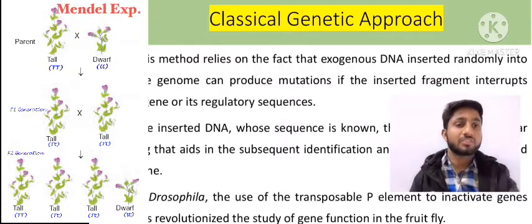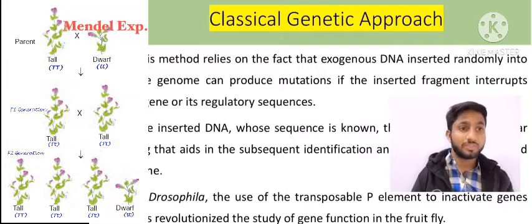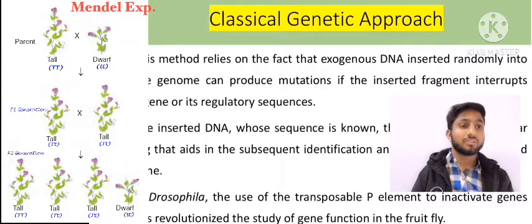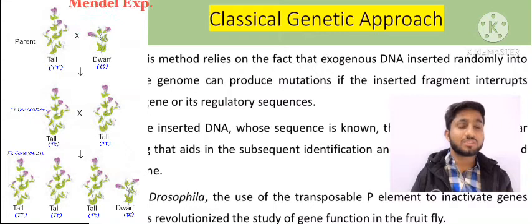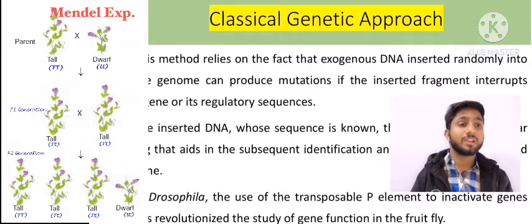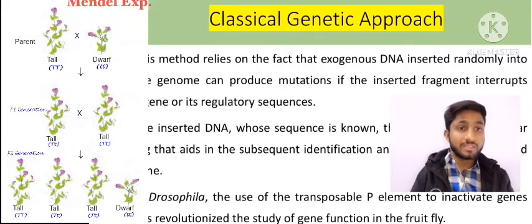Mendel investigated the exact reason for this variation. He later found phenomena such as co-dominance, incomplete dominance, and complete dominance to explain the variation in traits across generations. He also proposed the laws of inheritance, which are followed in modern genetics as well.